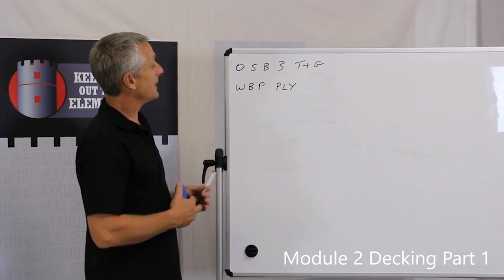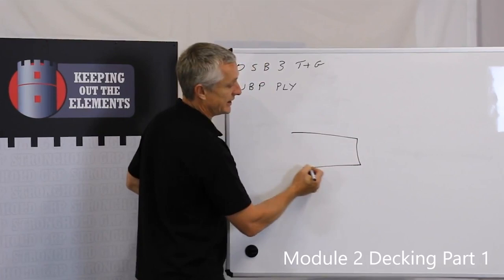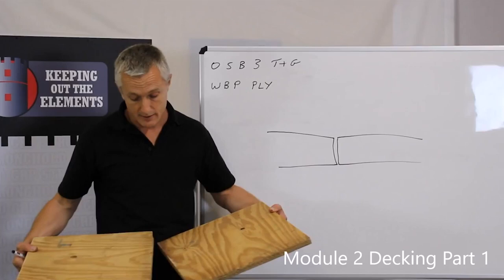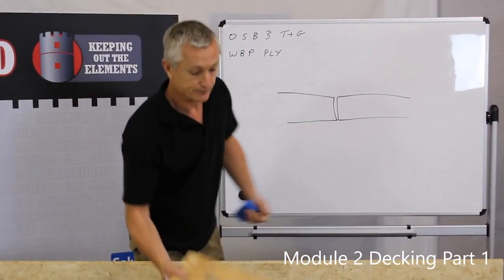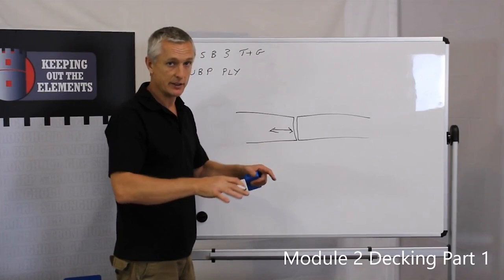If we briefly talk about the problems with butt joints. If I draw on the board, if you like an exaggerated butt joint, it's the end of one board, it's the end of the next board. When you use butt jointed products such as the ply, you should in theory leave a three millimeter gap between the boards. This gap then allows the joint to close up or to open up as the decking gets hot and cold and expands and contracts.